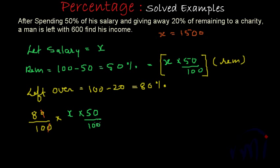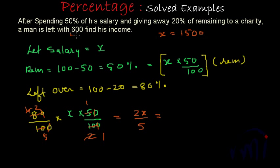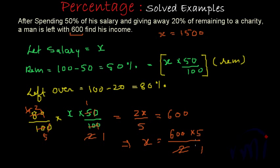Simplifying: the zeros cancel, and after reducing we get 2x by 5, which equals 600. From here, x equals 600 multiplied by 5 divided by 2, which gives 1500. So using this shortcut method we also get x equal to 1500. The shortcut works because all the percentage calculations — remaining is 50%, then 80% of that — can be done mentally, arriving directly at the expression 2x by 5 equal to 600.